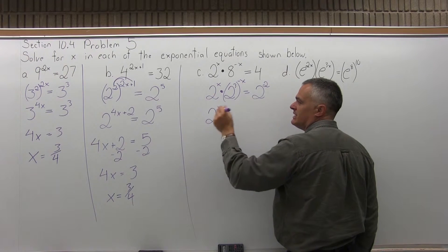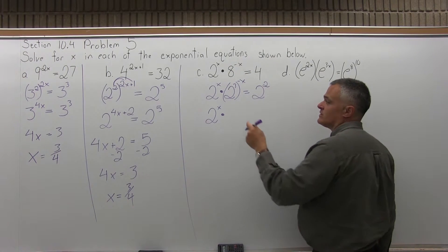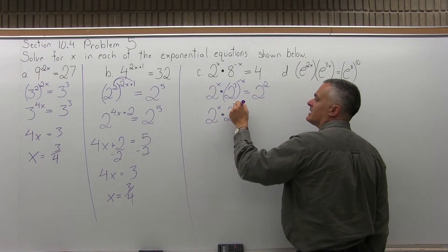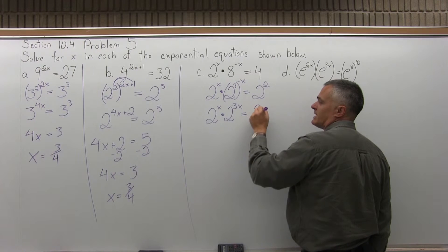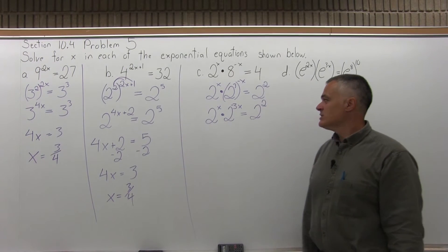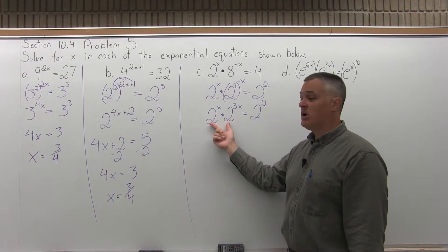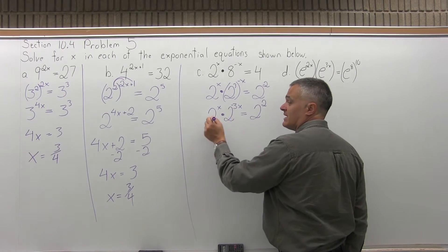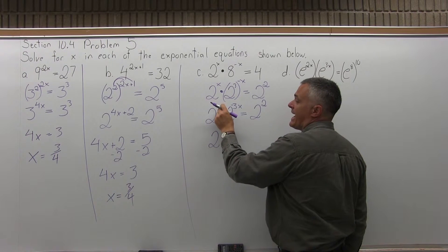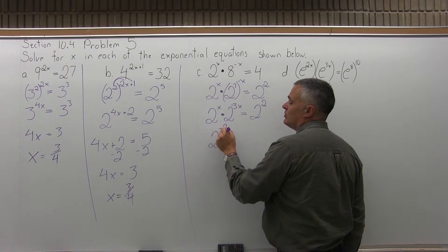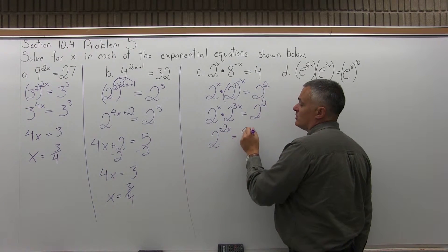The 2 to the x in front I can leave as is. For 2 to the third to the negative x — that's a power to a power — multiply the exponents: 3 times negative x is negative 3x. The right side stays 2 to the second. Now on the left I have 2 to the x times 2 to the negative 3x. The rules for exponents say when you have the same base and you're multiplying, you add the exponents. So x plus negative 3x is negative 2x.